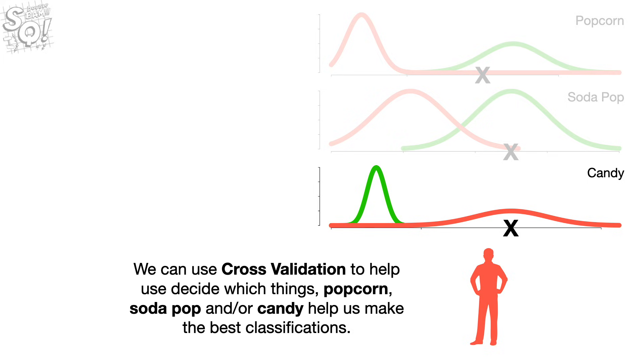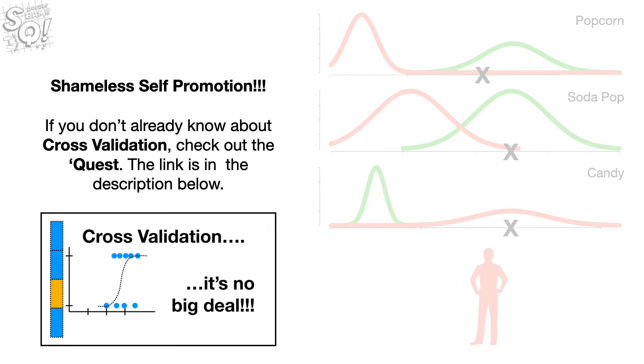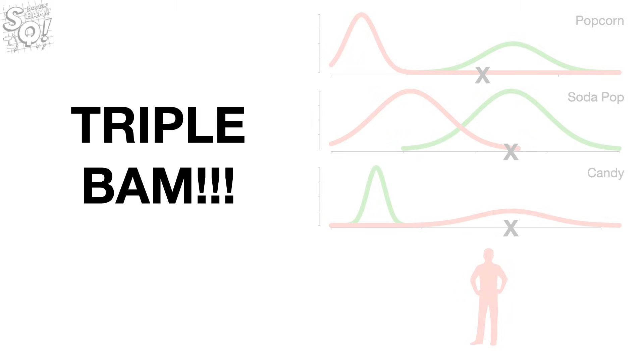We can use cross-validation to help us decide which things popcorn, soda pop, and or candy help us make the best classifications. Shameless self-promotion. If you don't already know about cross-validation, check out the quest. The link is in the description below. Triple Bam!